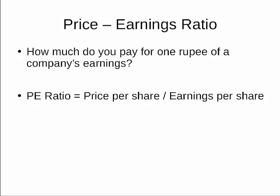PE Ratios come in two flavors. First, the trailing PE uses the prior 12 months of earnings. And second, the forward PE uses the expected earnings for the next 12 months. The forward PE is usually a better indicator, but is more uncertain since future earnings have to be estimated.